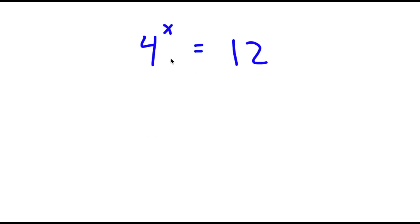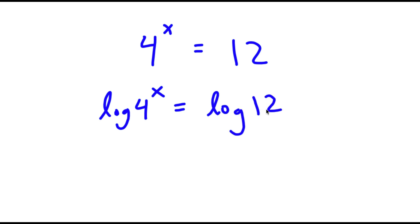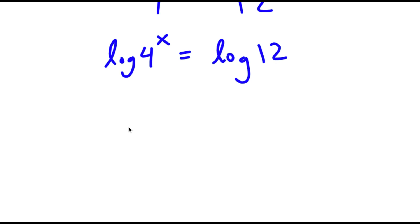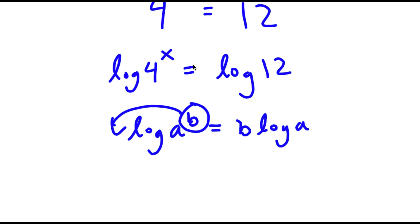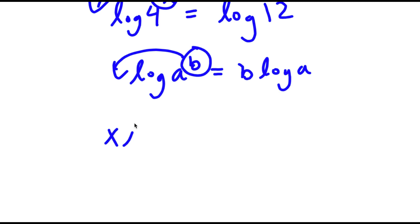In this problem, I have 4 to the power of x is equal to 12. To solve this, I'm going to first start by taking the log on both sides. So now I have log 4 to the power of x is equal to log 12. If I have something in the form log a to the power of b, this equals b times log a — I simply move the exponent to the front. So for log 4 to the power of x, I can move x to the front: x times log 4 is equal to log 12.